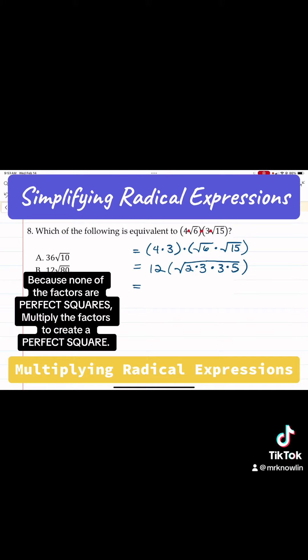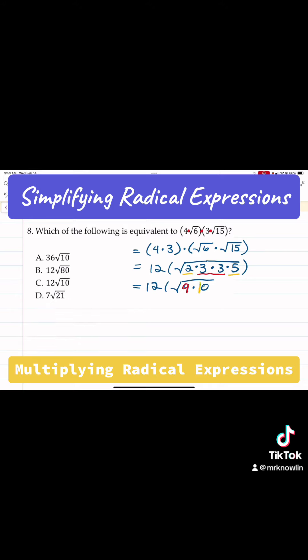What I'm going to do now is go ahead and multiply. So that's going to become the square root of 9 times 10, because we're going to multiply the 3's—that makes 9. We're going to multiply the 2 and the 5—that makes 10.